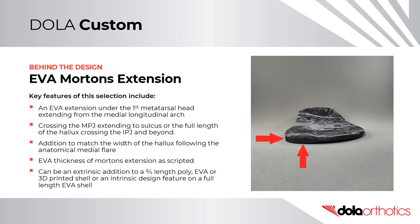Key features of the EVA Morton's extension include the addition of EVA under the first metatarsal head, extending from the medial longitudinal arch. It crosses the first MPJ and extends to the sulcus or full length of the hallux, crossing the IPJ and beyond. The addition matches the width of the hallux following the anatomical flare. It can be an extrinsic addition to a three-quarter length poly, EVA, or 3D printed shell, or an intrinsic design feature on a full-length EVA shell.